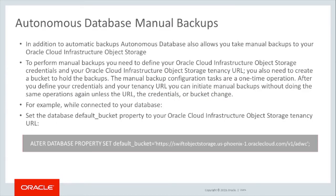In addition to automatic backups, Autonomous Database also allows you to take manual backups to your Oracle Cloud Infrastructure object storage. To perform manual backups, you need to define the Oracle Cloud Infrastructure object storage credentials and your Oracle Cloud Infrastructure object storage tenancy URL. You also need to create a bucket to hold the backups. The manual backup configuration tasks are a one-time operation. After you define your credentials and tenancy URL, you can initiate backups without doing the same operations again, unless the URL, the credentials, or the bucket change.